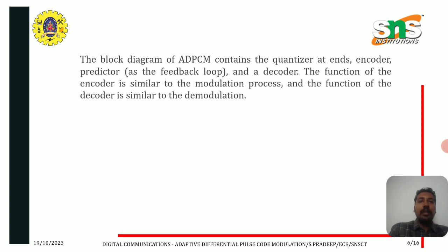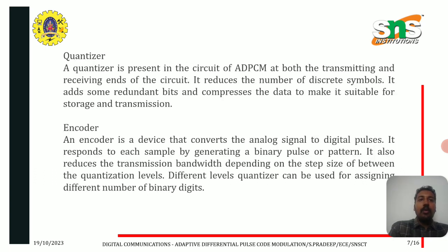The function of the encoder is similar to the modulation process, and the function of the decoder is similar to the demodulation. The quantizer is present in the circuit of ADPCM at both the transmitting and receiving ends. It reduces the number of discrete symbols, adds some redundant bits, and compresses the data to make it suitable for storage and transmission.